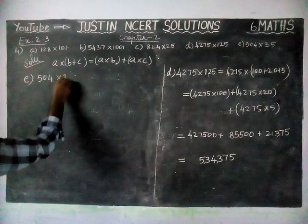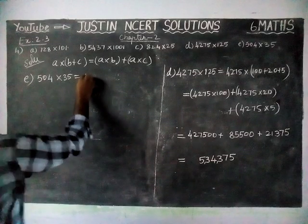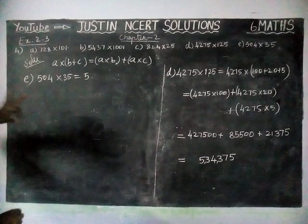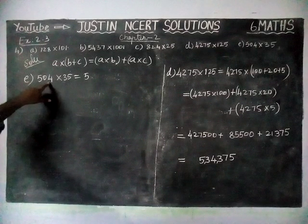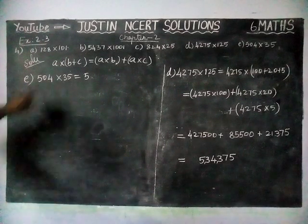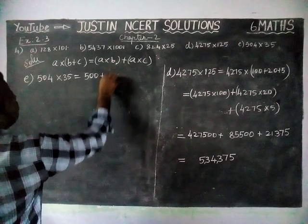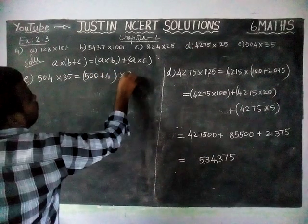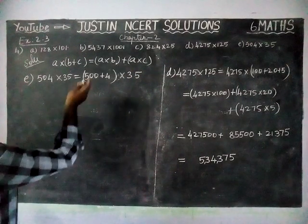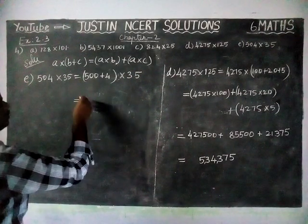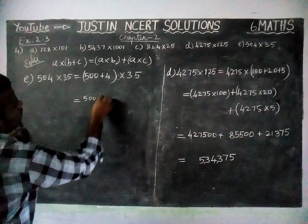Next option E: 504 into 35. We can do it in 2 methods — either we can separate 35 or we can separate 504. Now we are going to separate 504 as 500 plus 4 into 35, using the same concept A into B plus A into C. So now: 500 into 35.